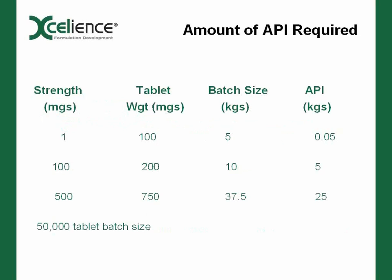This is something people often forget: for all of our design of experiments, we need to make sure we have the appropriate amount of API available. Once we start dealing with larger batches and the number of experimental batches needed for DOE work, we consume a lot of API very quickly. Even for a batch size as small as 50,000 tablets — which is not very big — if your strength is 100 milligrams, you're using five kilos per batch; at 500 milligrams, you're using 25 kilos per batch. If you don't plan this into your API manufacturing schedule, you won't have the material when you need it.